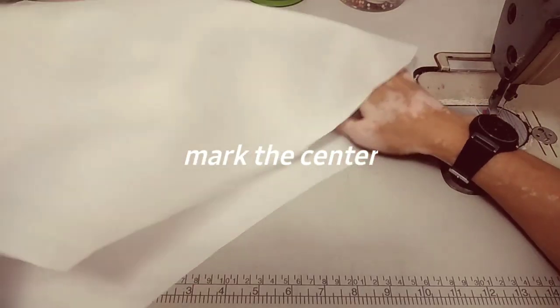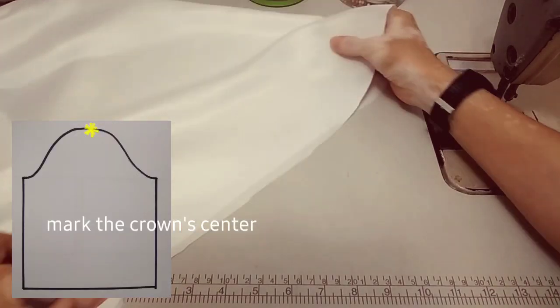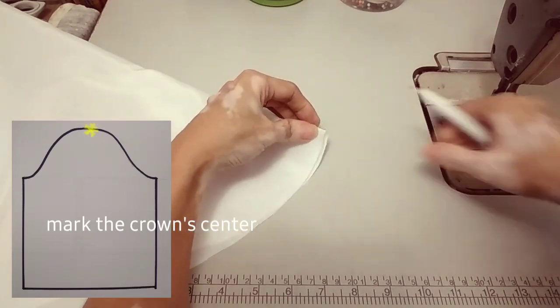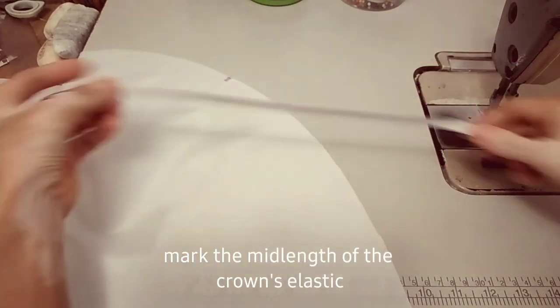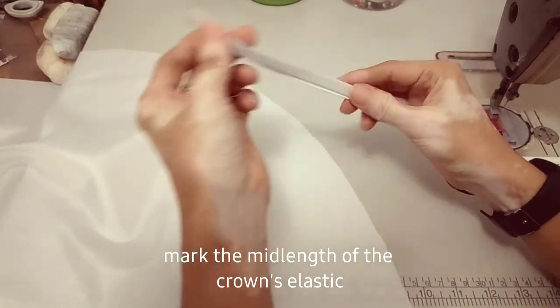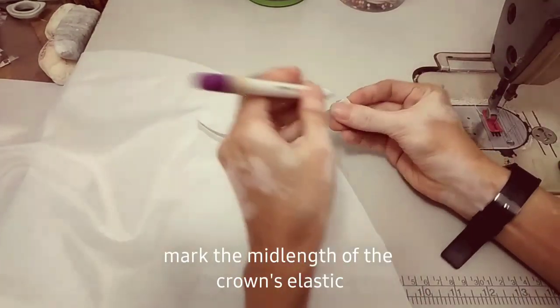Next, we'll mark the center of the crown, and then after marking the crown, mark the elastic as well. Same with the mid part of the elastic, or the center.